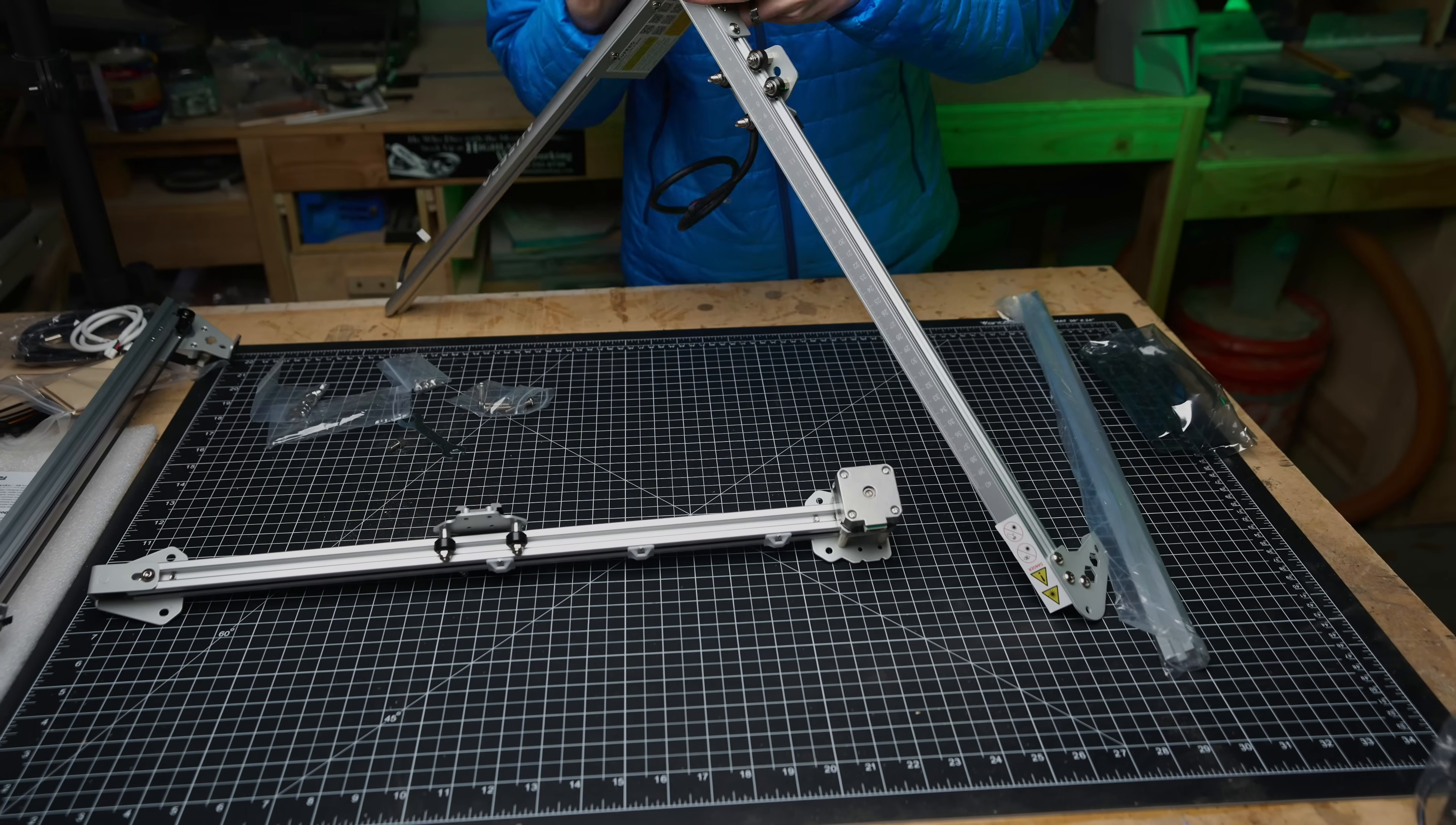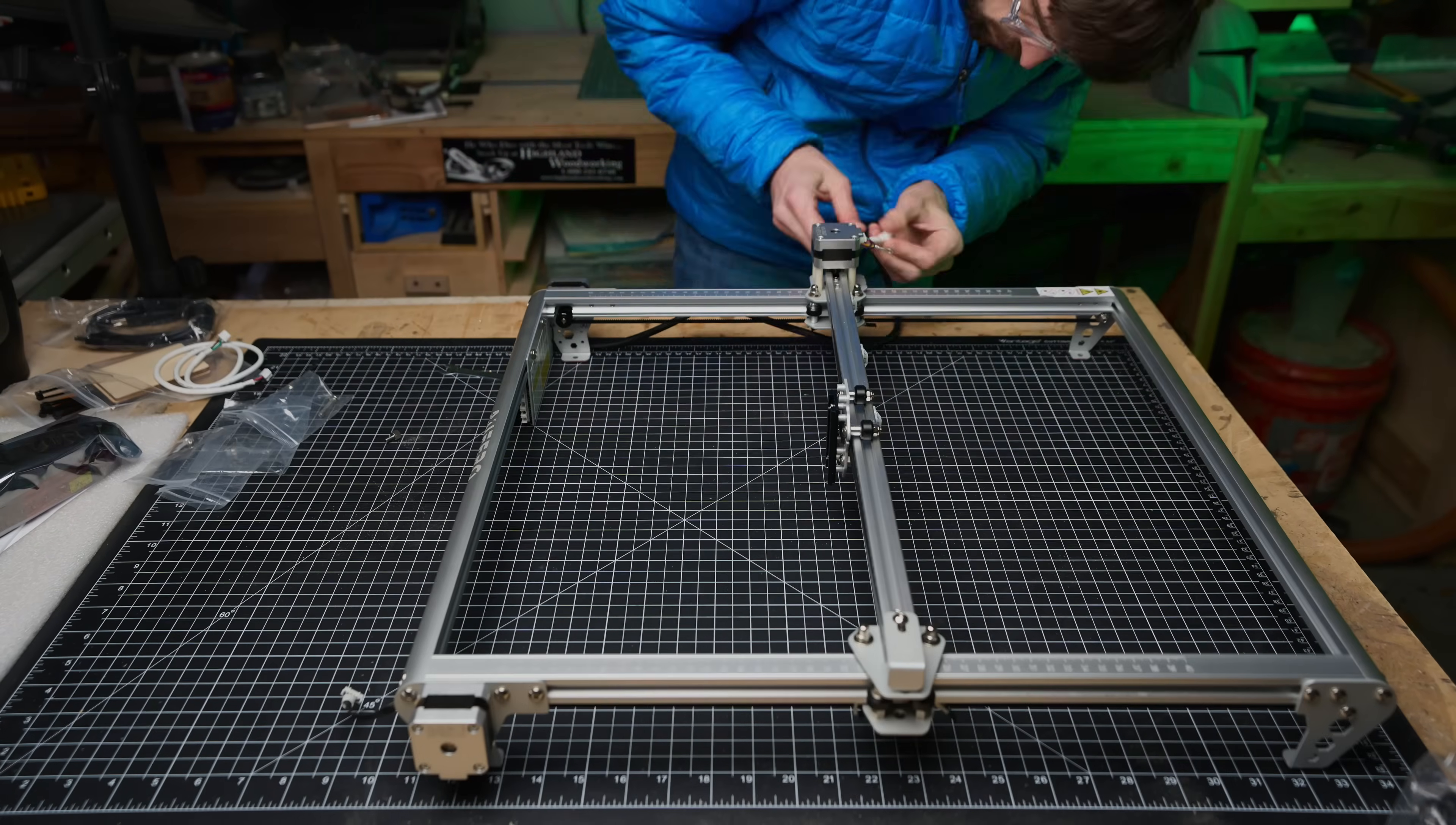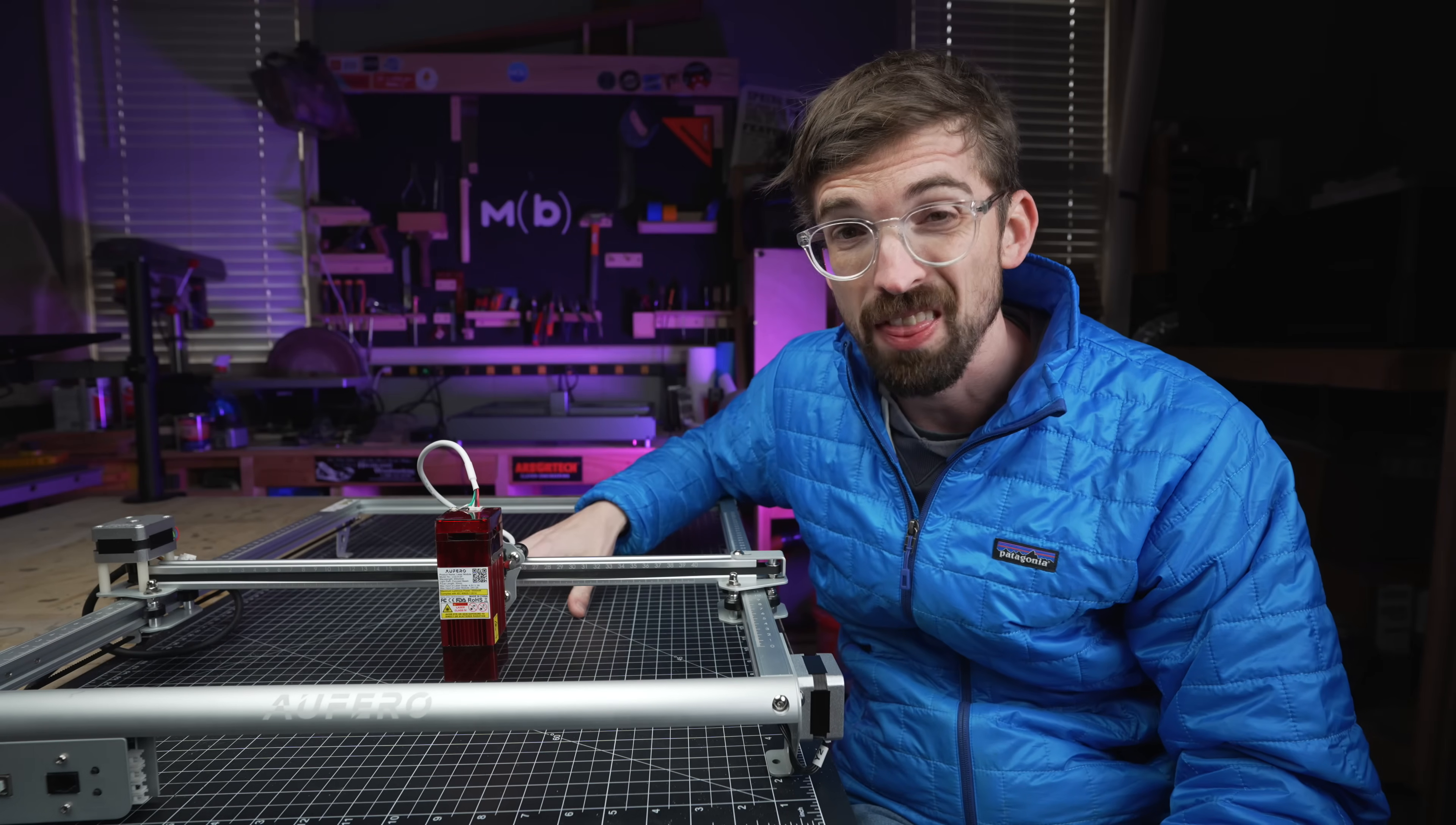So on the assembly side of things, it is pretty simple. Really, you're just attaching eight screws to put together these four sections. And then you're going to put your gantry here in the middle. You do have to run a couple of wires, but that's not a big deal. And then you drop in your laser module. Now this probably took me about 30 minutes to put together. So it's really not a huge deal on that end.